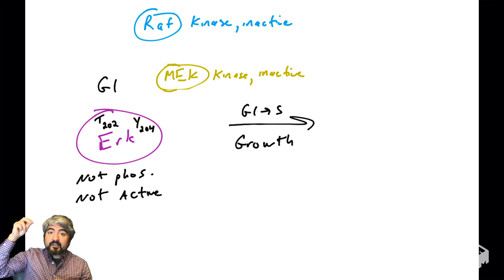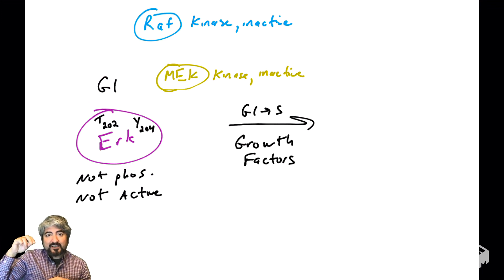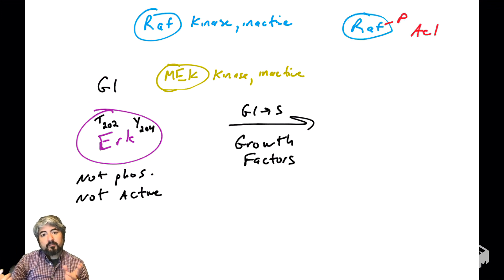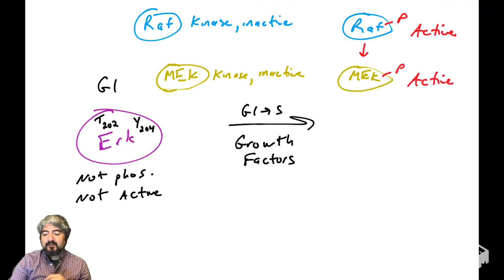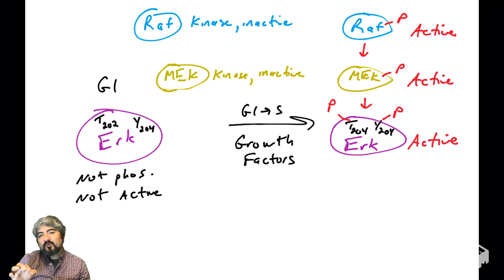When we get an extracellular signal, we're hit with mitogens, growth factors, which bind growth factor receptors, that can signal to RAS and then to RAF, which will become phosphorylated and active, which will phosphorylate MEK, which will activate it, which will now phosphorylate ERK. And now that ERK is phosphorylated, it is an active kinase. So again, an extracellular signal regulates this kinase. And that's why it's called ERK.